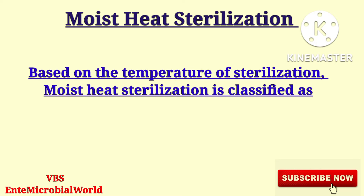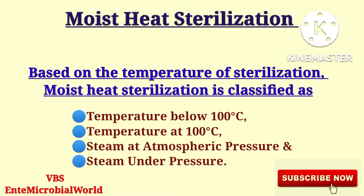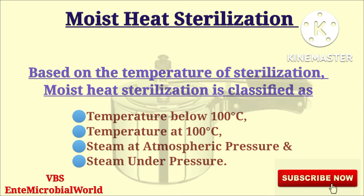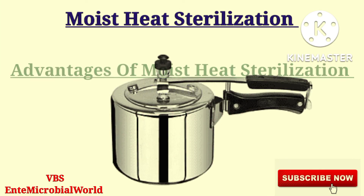Based on the temperature of sterilization, moist heat sterilization is classified into three categories: temperature below 100 degrees Celsius, temperature at 100 degrees Celsius with steam at atmospheric pressure, and steam under pressure.